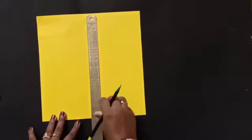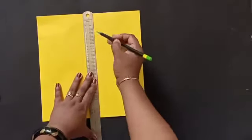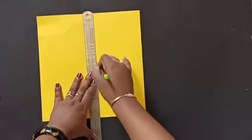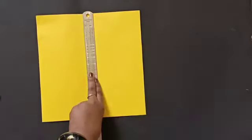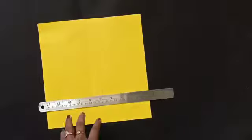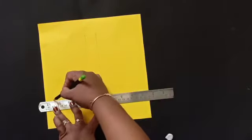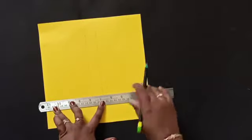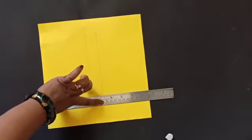Now to start with, first of all, we will place the scale in the middle of the paper and draw two standing lines like this. Now we will place the scale in this way and make two sleeping lines like this.